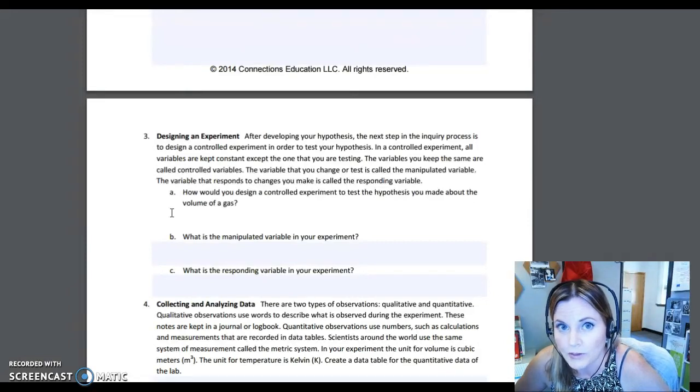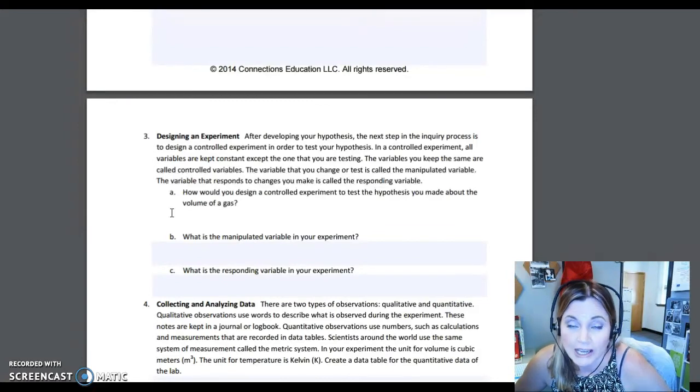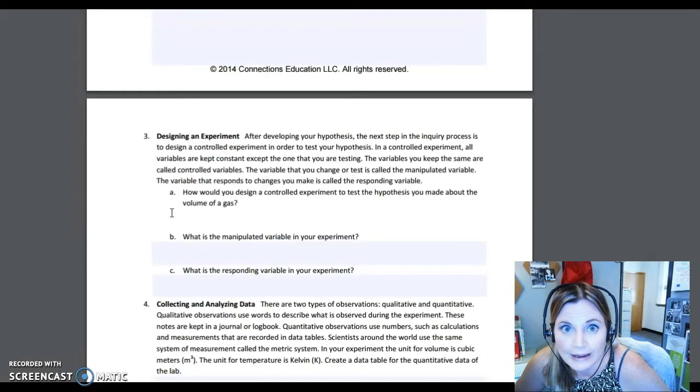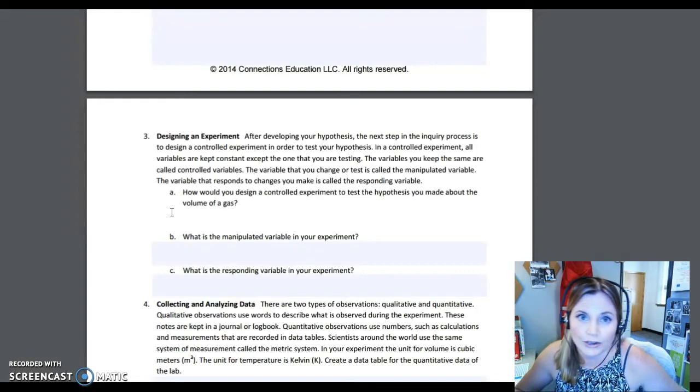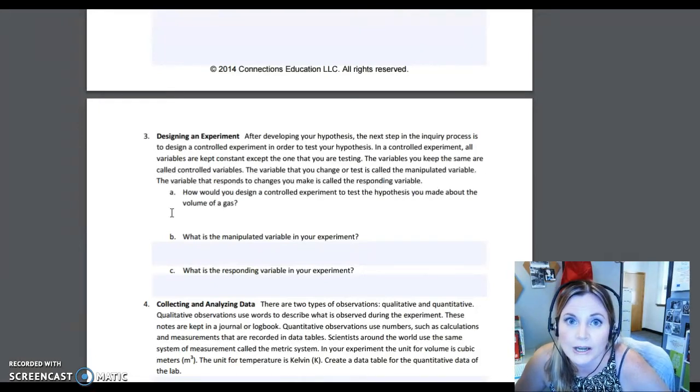It asks for the manipulated variable and the responding variable. Some of you might know these as the independent and the dependent variables. I prefer the terms manipulated and responding because they make more sense. Manipulated is the thing that you will change, and responding is what changes as a result of what you've changed. For example, in my earlier analogy, I'm changing the temperature, and what happens is the state of matter of the material I'm working with. Either it freezes or I've changed it to a solid. So what I did was change the temperature. What happened was it turned into a solid.